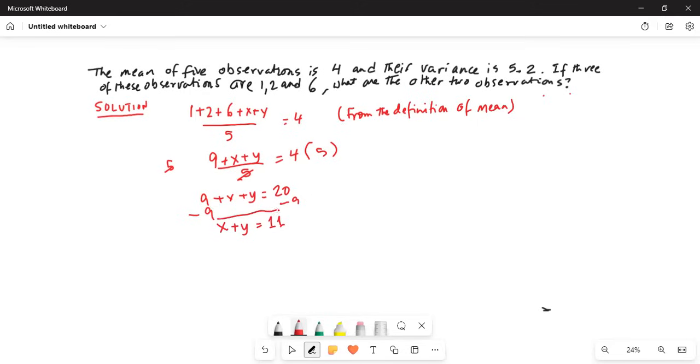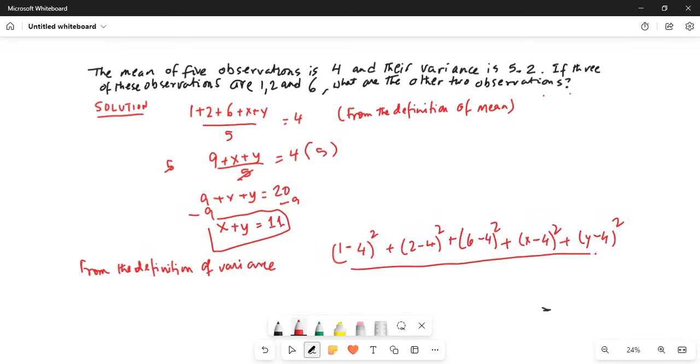So this is one equation we have x plus y is equal to 11. Now from the definition of variance, we have (1 minus 4) squared plus (2 minus 4) squared plus (6 minus 4) squared plus (x minus 4) squared plus (y minus 4) squared, whole thing is divided by the sample population size, we'll assume these numbers of population is divided by 5 is equal to 5.2.